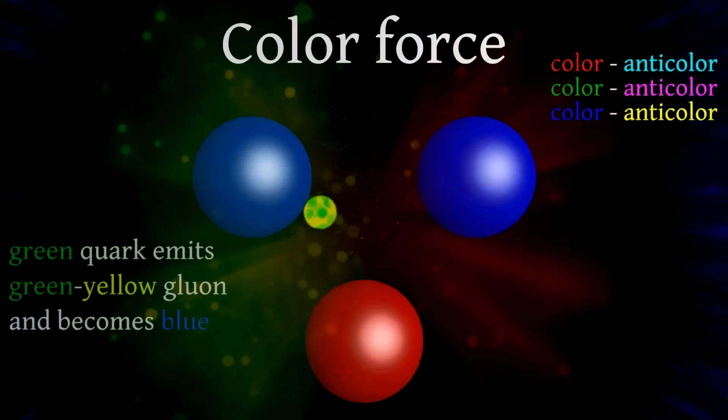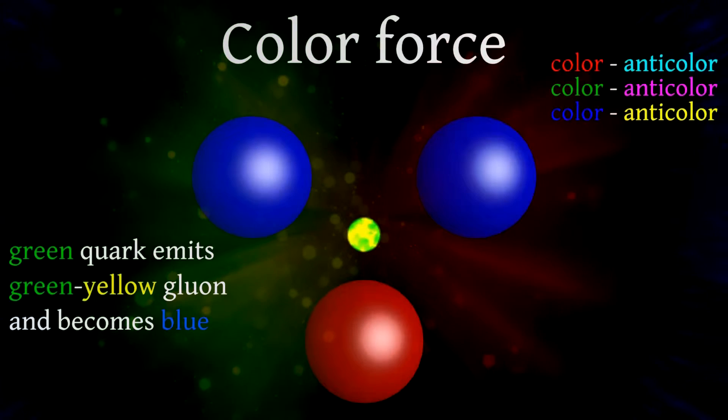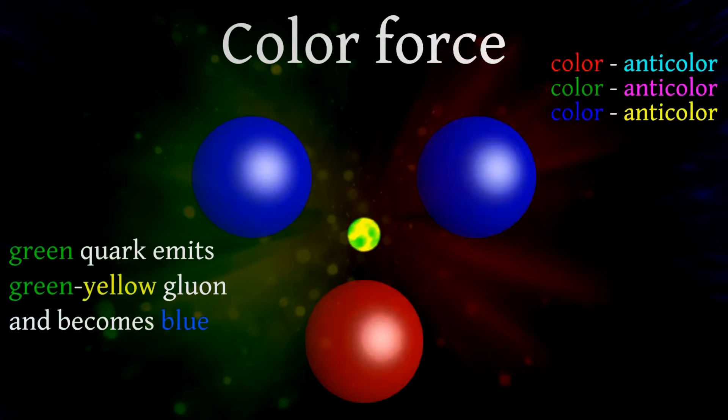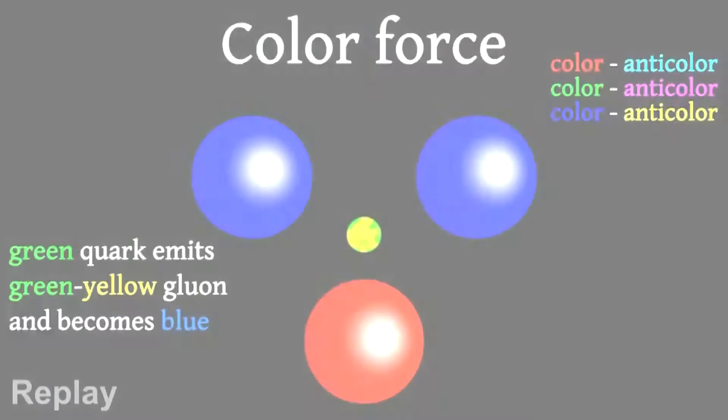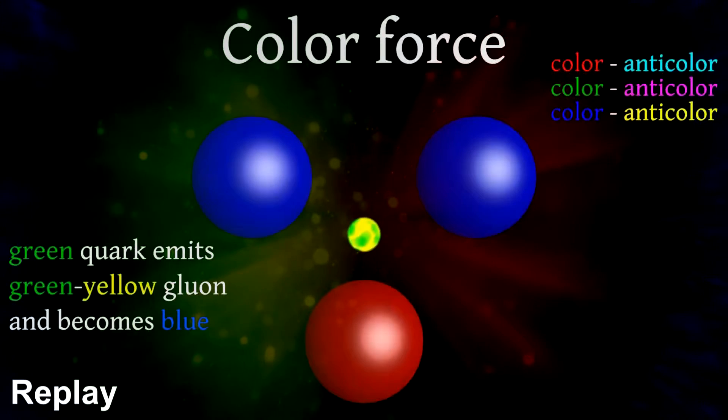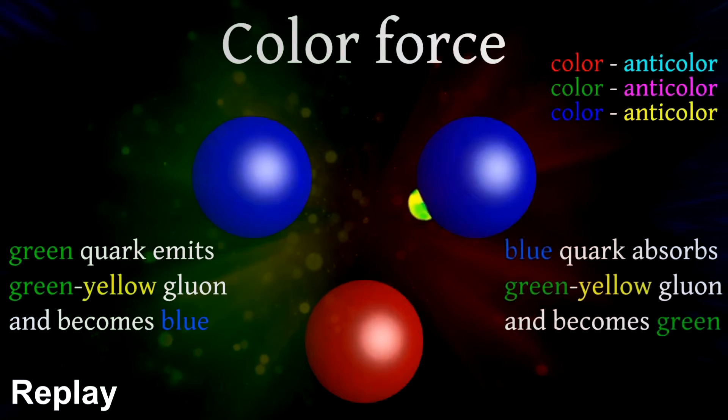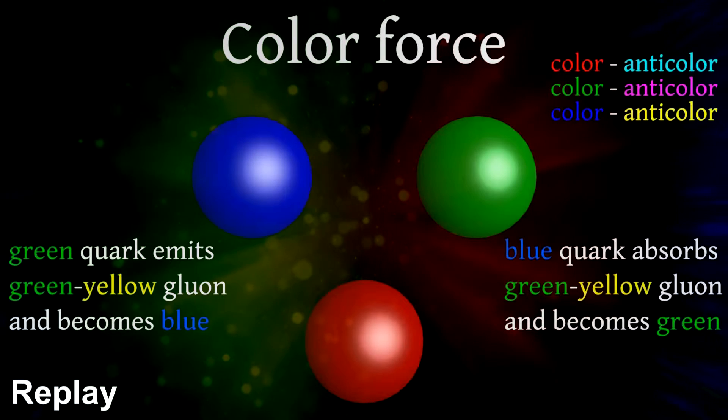In the example, it was a green anti-blue gluon, thus the quark that emitted that gluon will be blue. The quark that receives the gluon will be the regular color that's in the name of the gluon. Looking back at that same example, the green anti-blue gluon cancels the blue color of the quark, and the green color now becomes the new color of the quark.